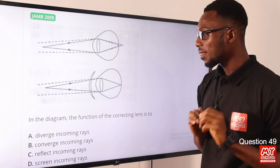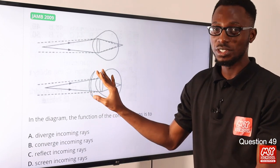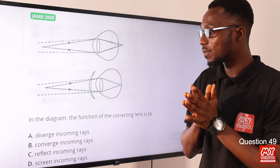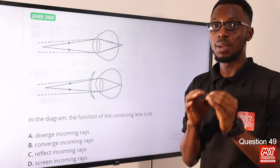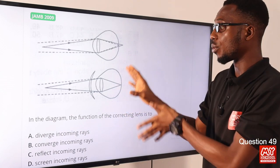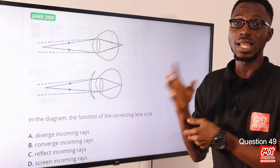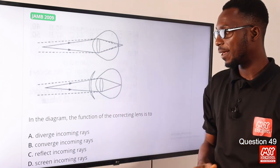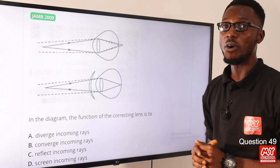Question 49: The function of the correcting lens in the diagram is to converge incoming rays. For long-sightedness or hypermetropia, a convex lens converges the incoming rays from close objects so that light rays are focused properly on the retina. For myopia or short-sightedness, a diverging lens is used to diverge the incoming rays. The correct option is option B: converge incoming rays.